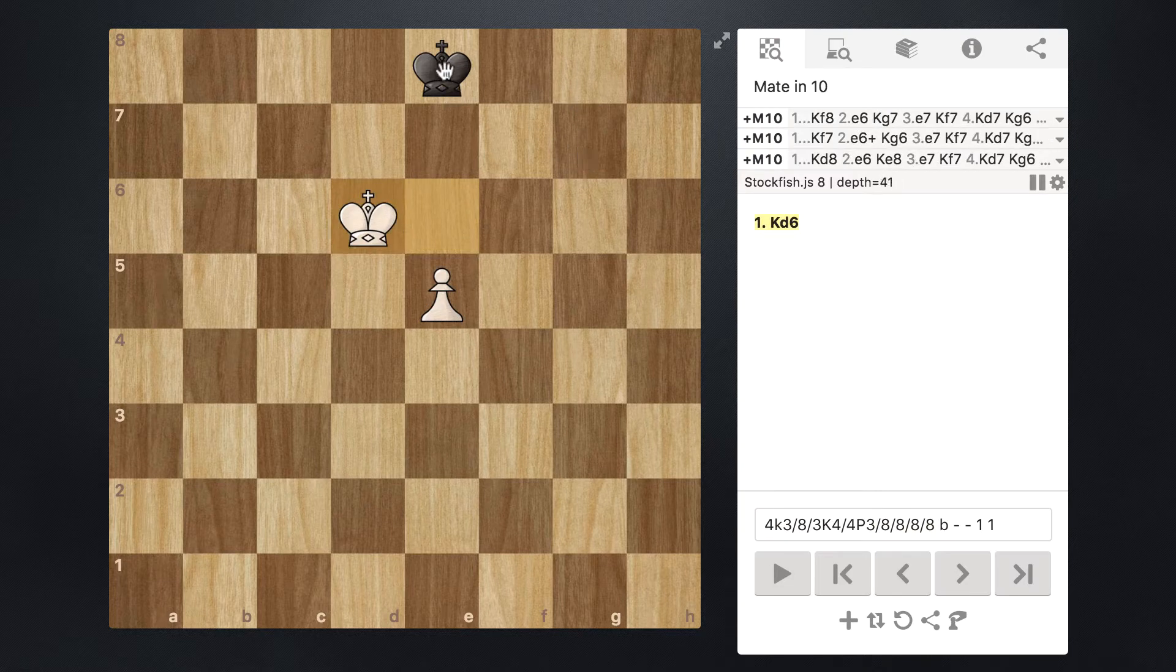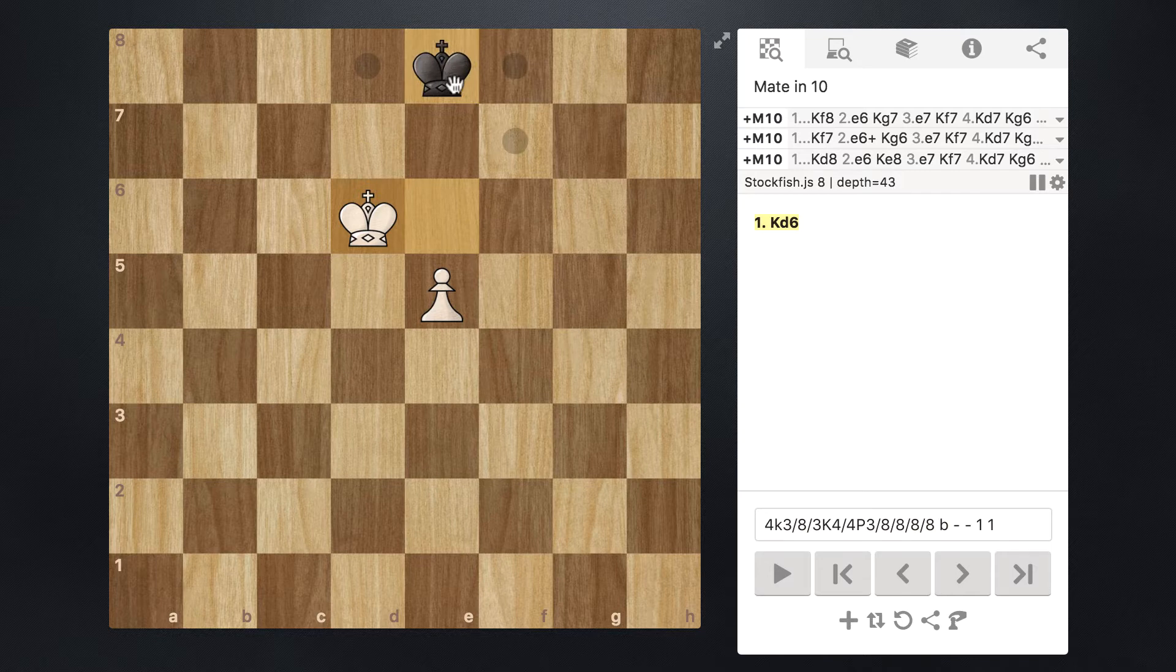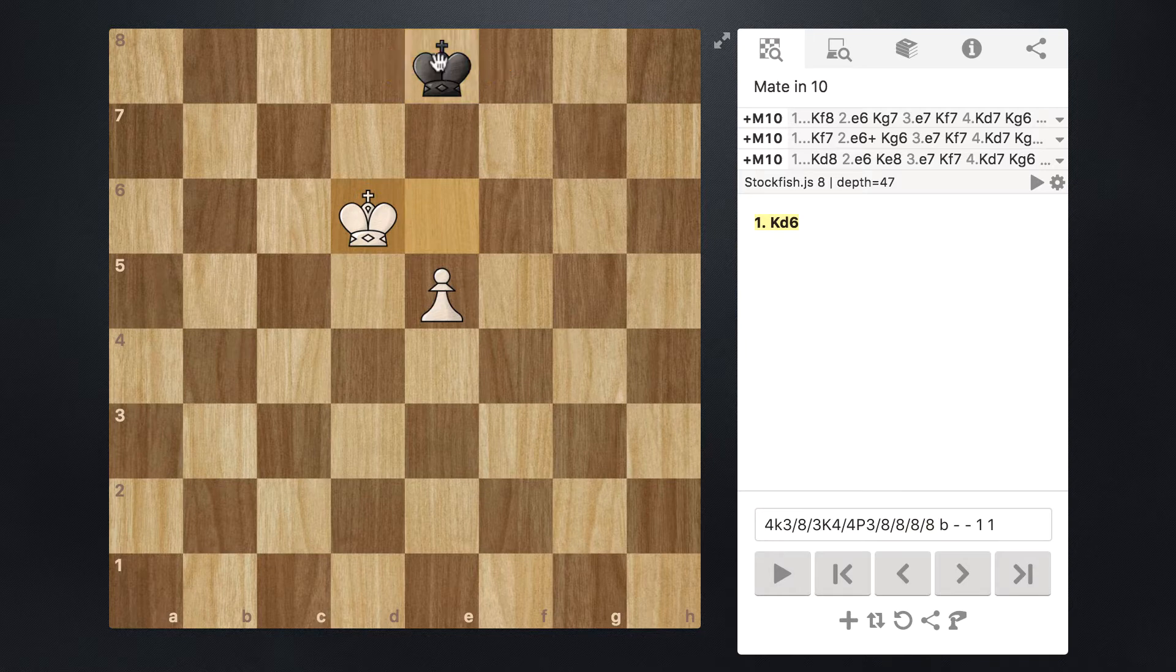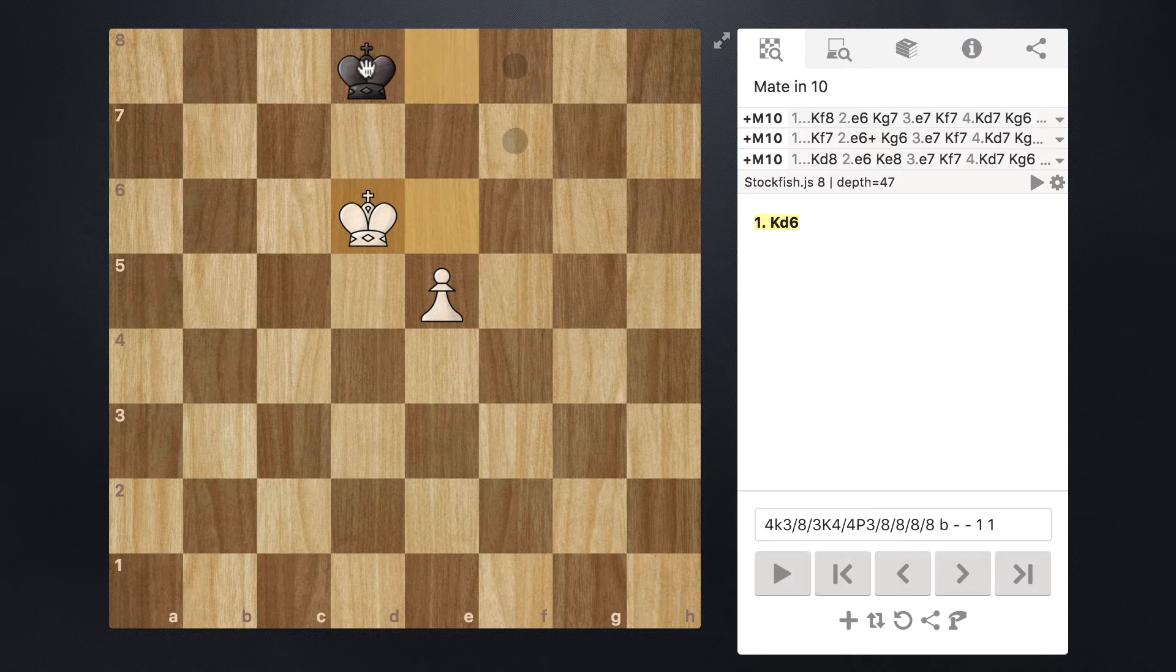Now the enemy king, this black king right here, it has three possibilities. It can move to the left, it can move to the right to f8, or it can move down at an angle to f7. Now moving to the left or right is essentially the same concept. So let's go ahead and cover that first. We'll say that the enemy king just moves one to the left.